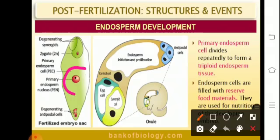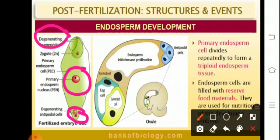This is the PEN, that is the primary endosperm nucleus. The primary endosperm cell divides to form the triploid tissue. The antipodal cells get degenerated after the formation of endosperm, because the function of providing nourishment will henceforth be carried out by the endosperm. Also, the synergids start degenerating because fertilization has taken place — the filiform apparatus as well as the synergids had guided the male gamete towards the egg.